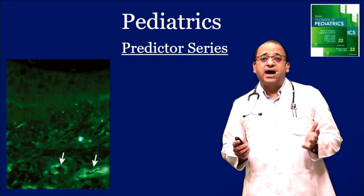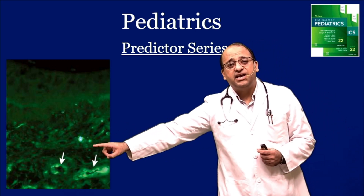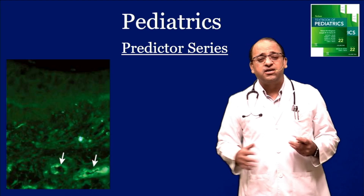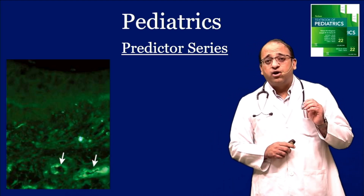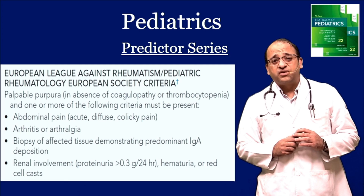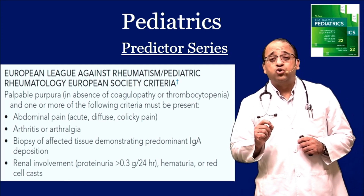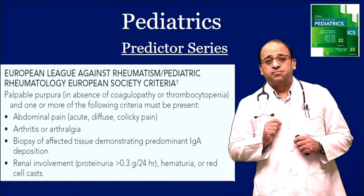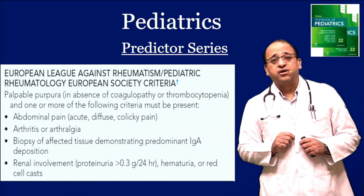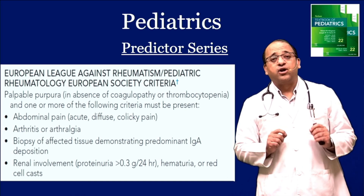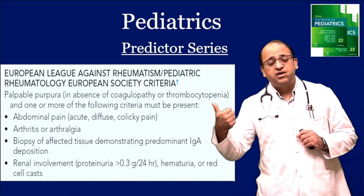We call it IgA vasculitis or Henoch-Schönlein Purpura. Remember, there is IgA deposition — if you do a skin biopsy, you'll find IgA deposition in the dermis. Important for your exams: whether you get a child or an adult with palpable purpura, you should know the EULAR definition — the European League Against Rheumatism definition for Henoch-Schönlein Purpura or IgA vasculitis.